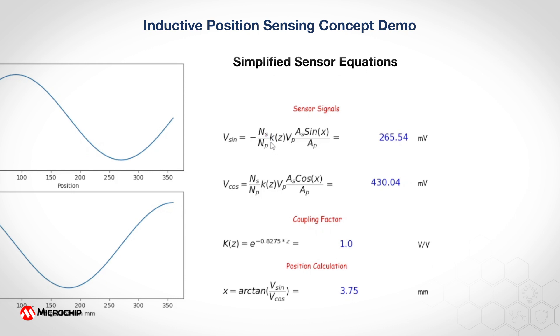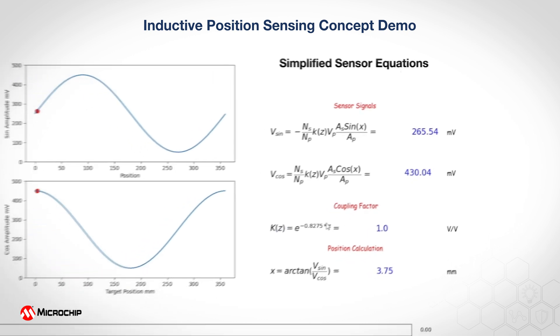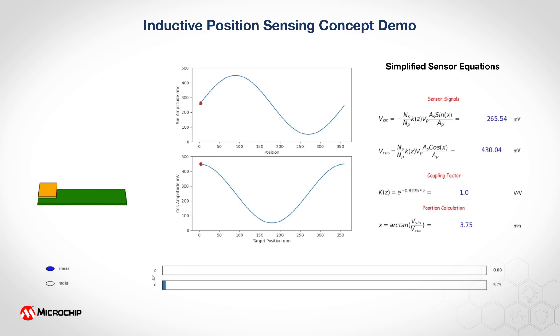We also have KZ which is the coupling factor due to the air gap that we are setting on our sensor. So if you change the z-axis on the position sensor by moving the metal target either away from the sensor or closer to the sensor, our model here gives us that the coupling factor decreases or increases in value that would affect the amplitude of the analog signal we get at the end.